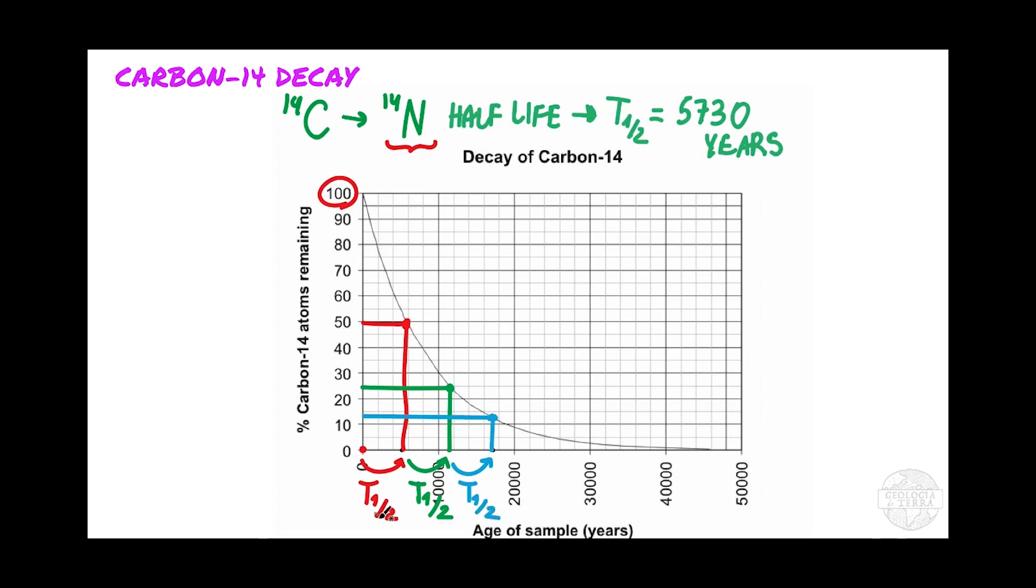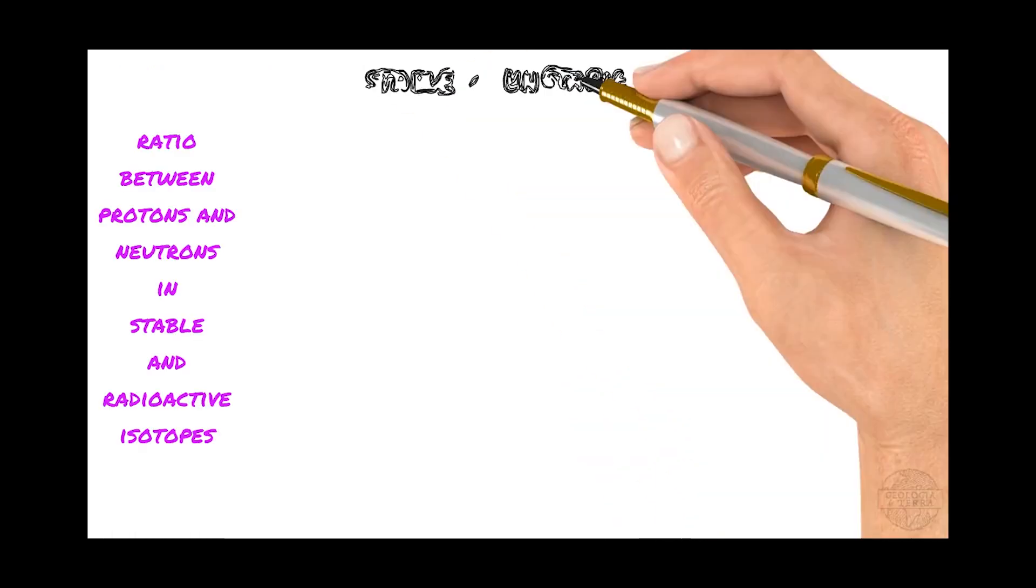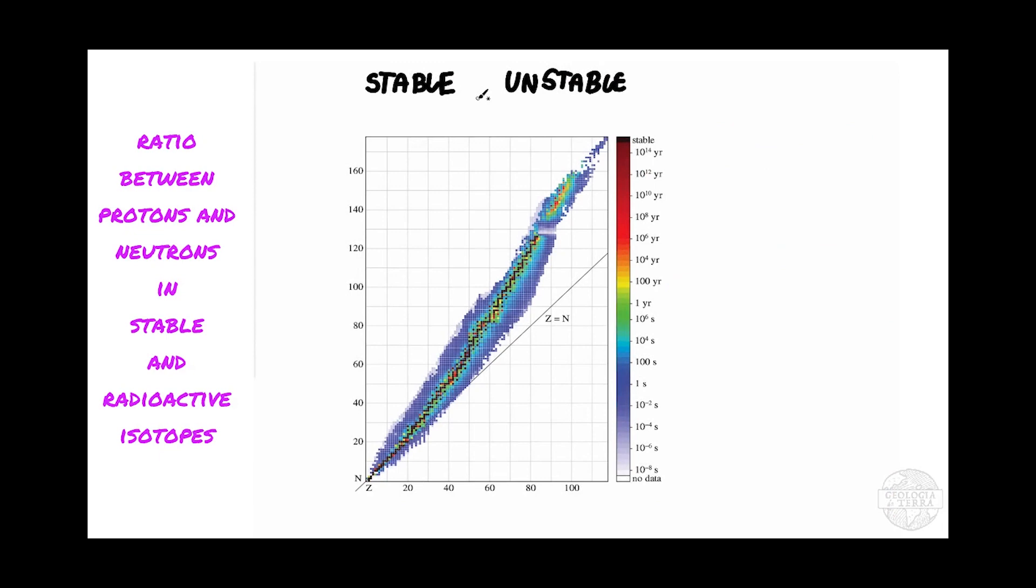One important thing to notice is that after one half-life, we have 50% of carbon-14 atoms remaining, which means that 50% of the carbon-14 atoms have decayed to nitrogen-14. After two half-lives, we will have 25% of carbon-14 atoms, which means that 75% will have decayed to nitrogen-14 atoms.